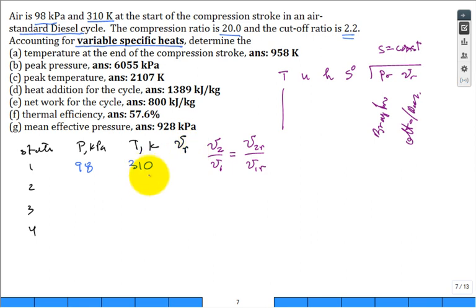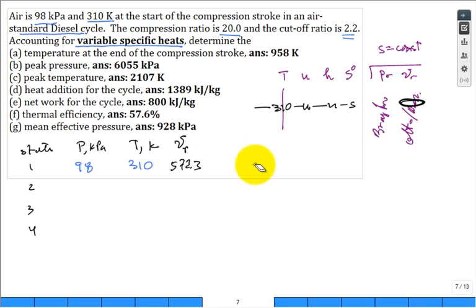So I need to go and look up another V sub R column. I need to look it up at 310 Kelvin. Don't look up, you can look at what U is and H is and S naught is, but really what I want is that V sub R. So V sub R is 572.3 at this temperature of 310 Kelvin. And let's go ahead and put the U, 221.25 and the H, 310.24.